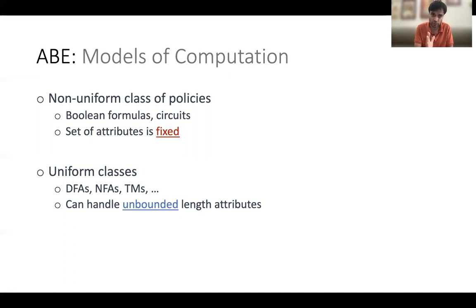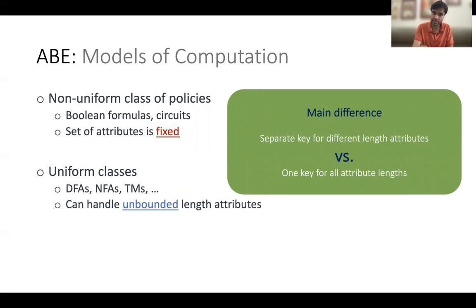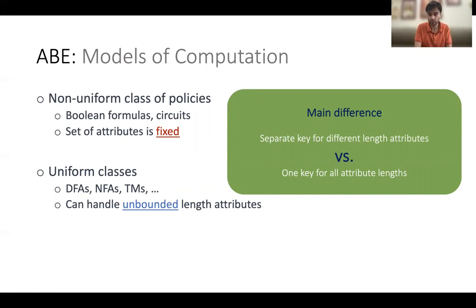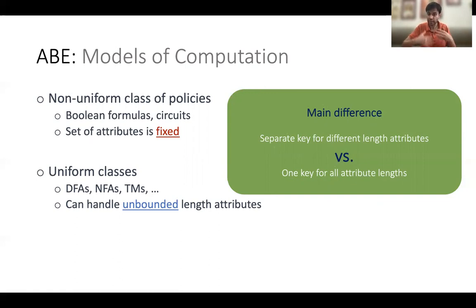The main difference between these two models is that we need a separate key for non-uniform models, because we have to specify a separate key for each different length of the attributes. Whereas in uniform classes, you specify a single secret key and that can handle all unbounded length attributes. For example, suppose you have to give out a secret key where the person has to perform a firewall check and read a regular expression — if the regular expression satisfies your predicate, then you can decrypt the message. There are plenty of applications in which uniform models are much more useful in practice.